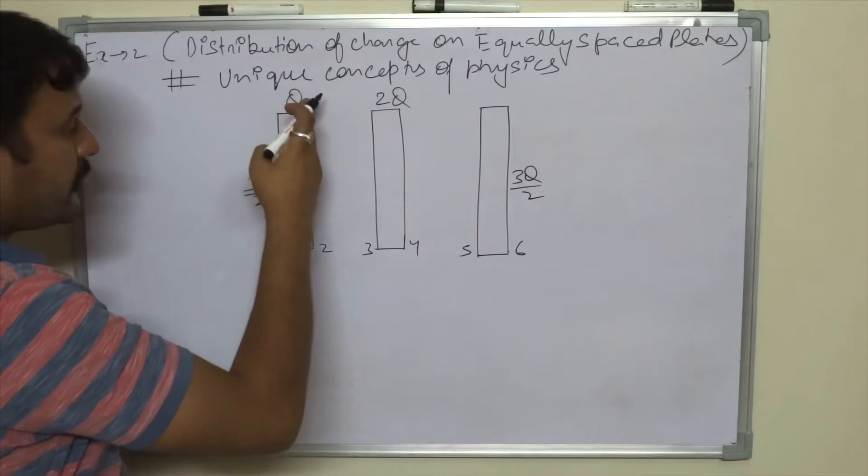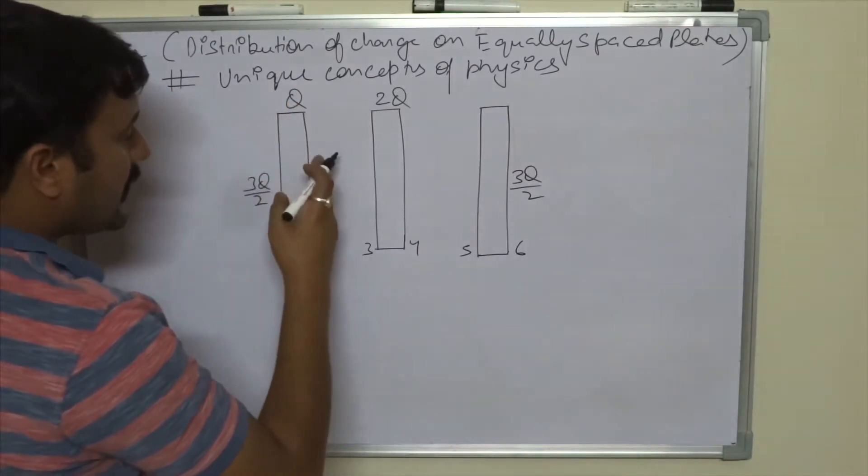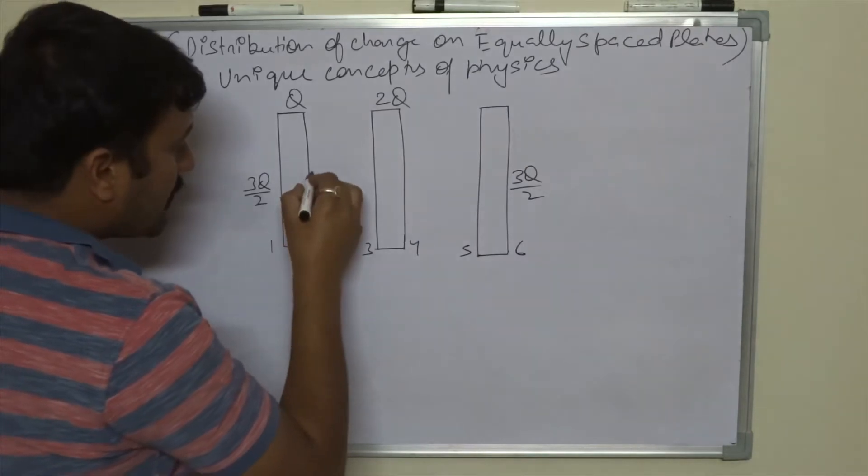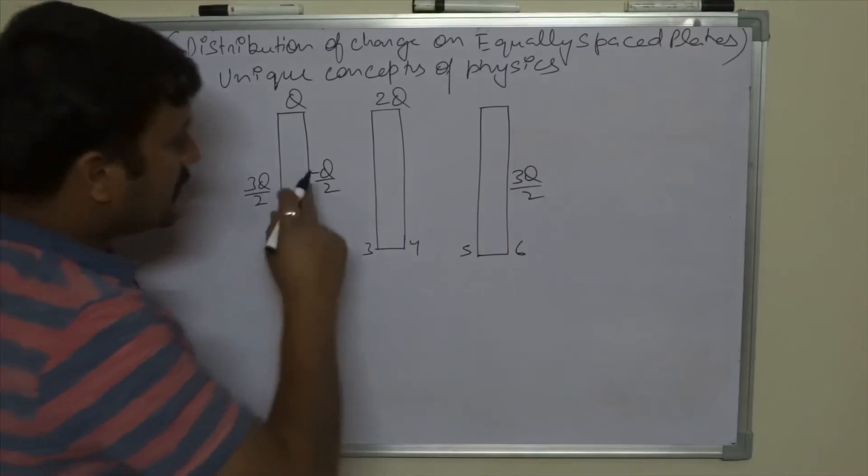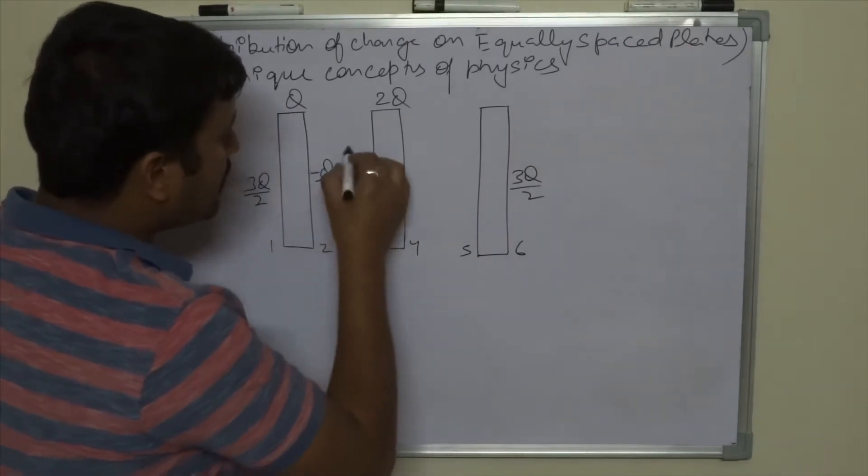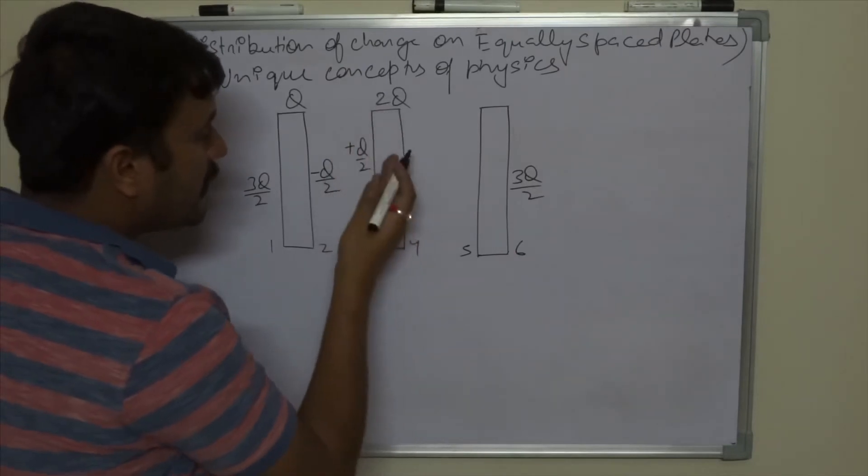Out of Q, if 3Q by 2 is induced here, then the remaining charge at this surface would be minus Q by 2. These are bounded charges, hence it would be plus Q by 2. Out of 2Q, Q by 2 is induced here.